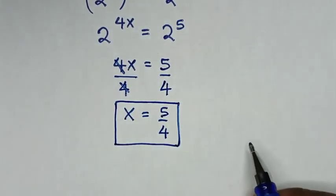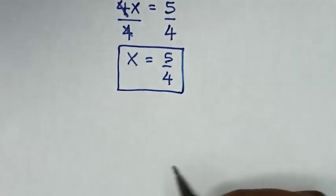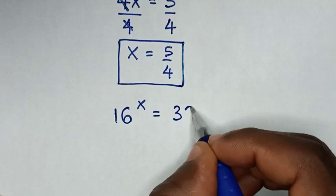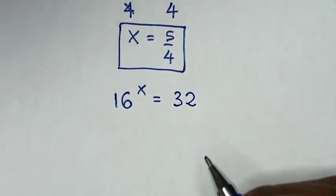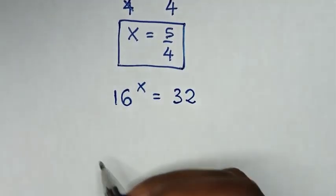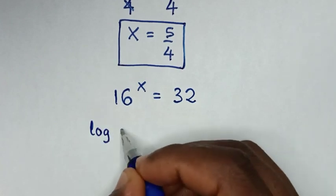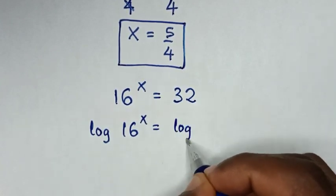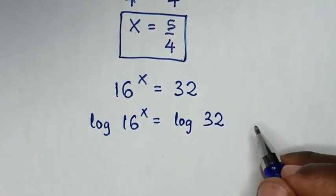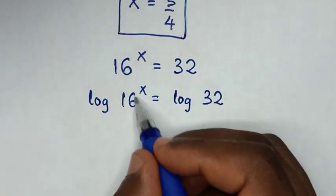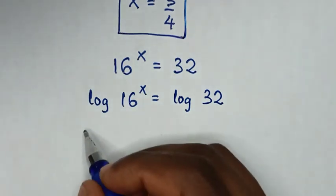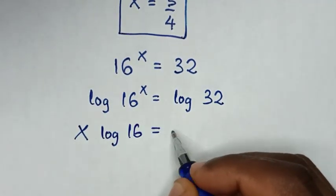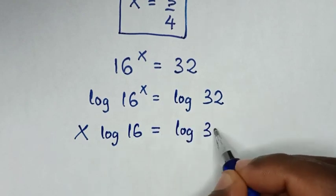Or, to solve in another method, from our problem which is 16 power of x is equal to 32, we will apply log in both sides. So it will be log of 16 power of x is equal to log of 32. Then in the next step, this power of x will move to the front. So it will be x log of 16 is equal to log of 32.